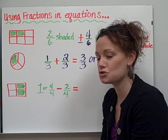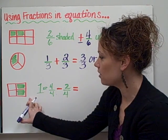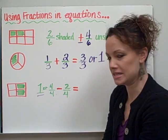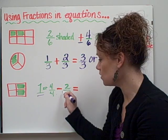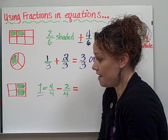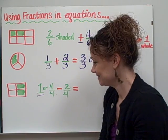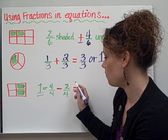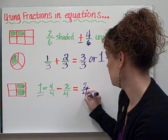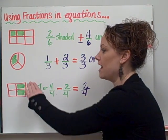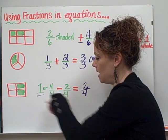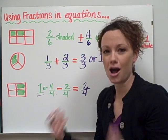We can also use this example in subtraction. We have our entire shape represented as 1 whole, or 4 pieces out of 4 pieces. If I take away 2 out of 4, or 2 fourths that are shaded, how many would I have that are unshaded? If we look at just our numerators, we take our 4, take away our 2, and we get 2. My denominator stays the same. So this shows me that out of my whole rectangle, if I take away 2 fourths that are shaded, I will be left with 2 fourths that are unshaded.